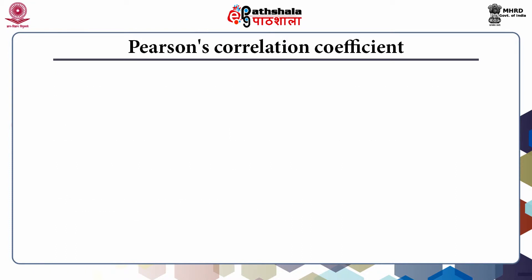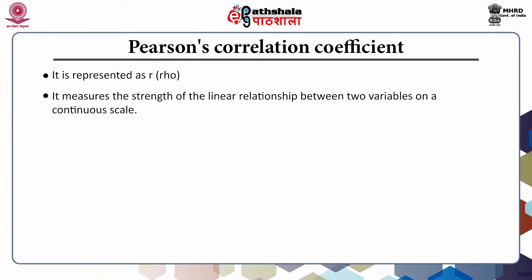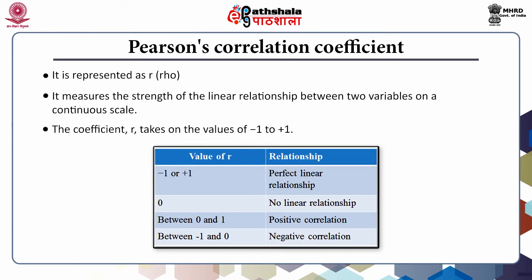Pearson's correlation coefficient is the most commonly used correlation coefficient. It is represented as rho. It measures the strength of the linear relationship between two variables. The coefficient r takes on values from minus 1 to plus 1. When the value of r is minus 1 or plus 1, there is a perfect linear relationship between the two variables. When the value is 0, there is no linear relationship.